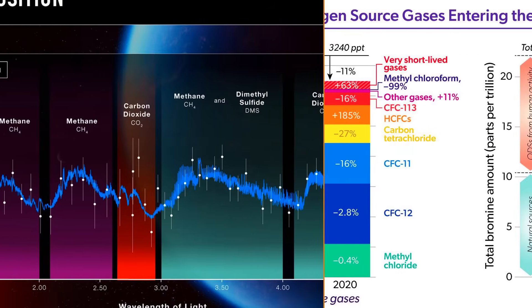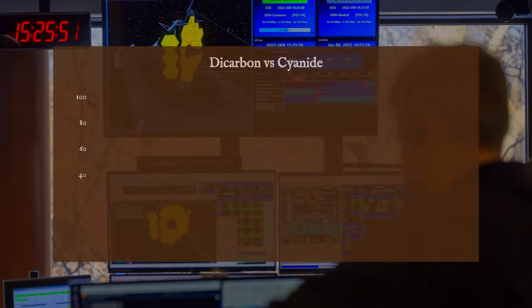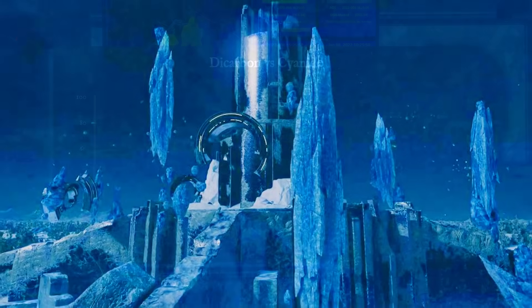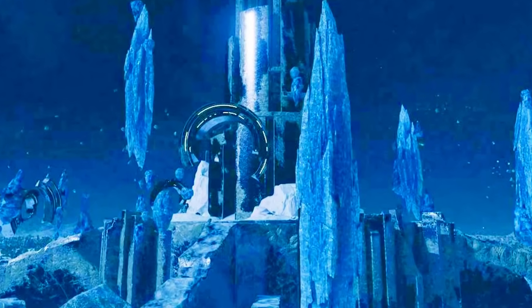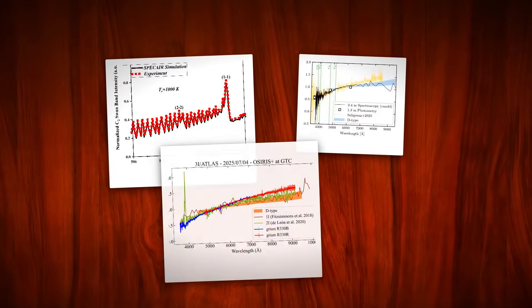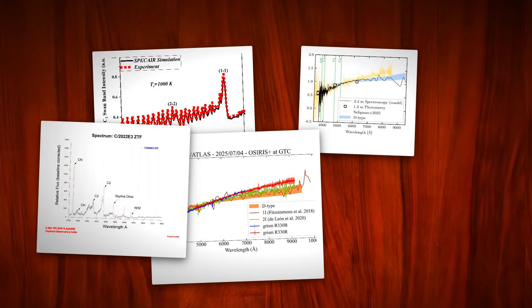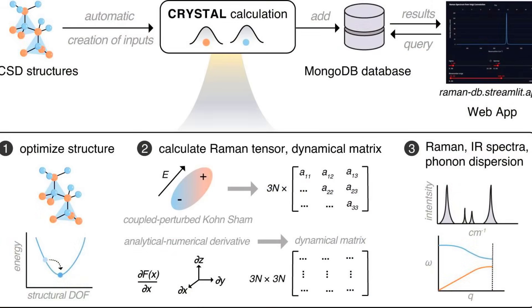For now, the data resist easy interpretation. The absence of dicarbon, paired with a runaway cyanide signal, keeps the chemistry puzzle wide open. Each new spectrum adds fuel to the argument that 3I Atlas is sampling a chemical diversity far beyond anything catalogued in our own backyard.